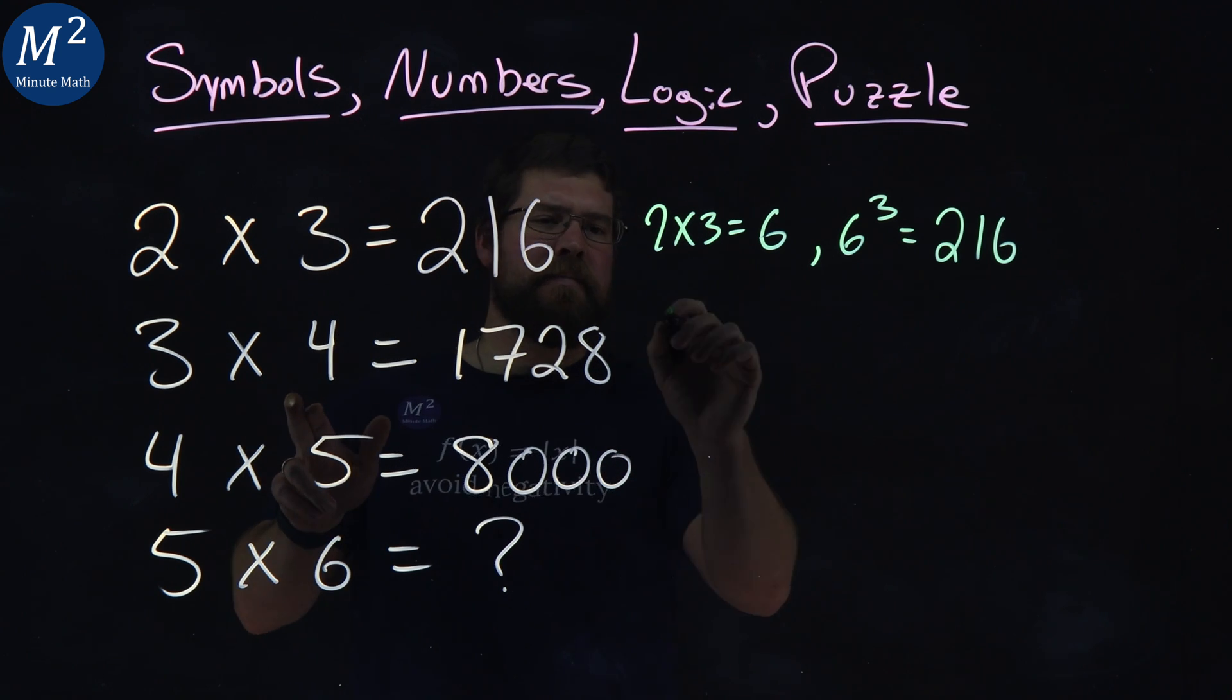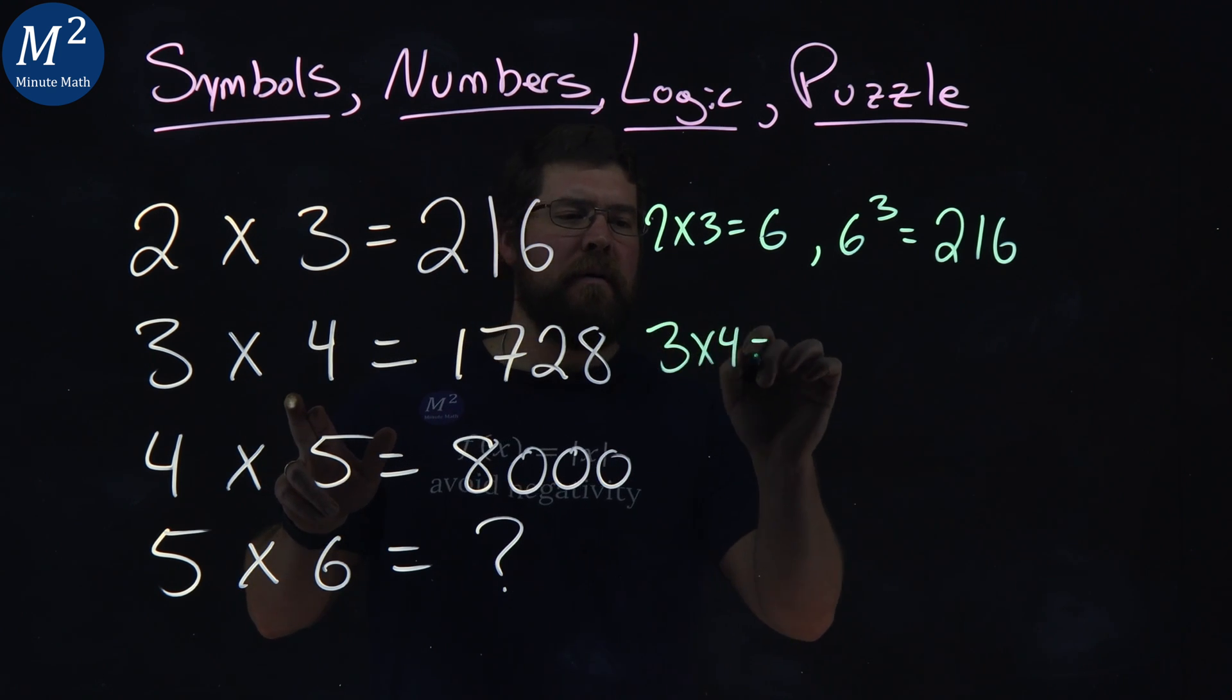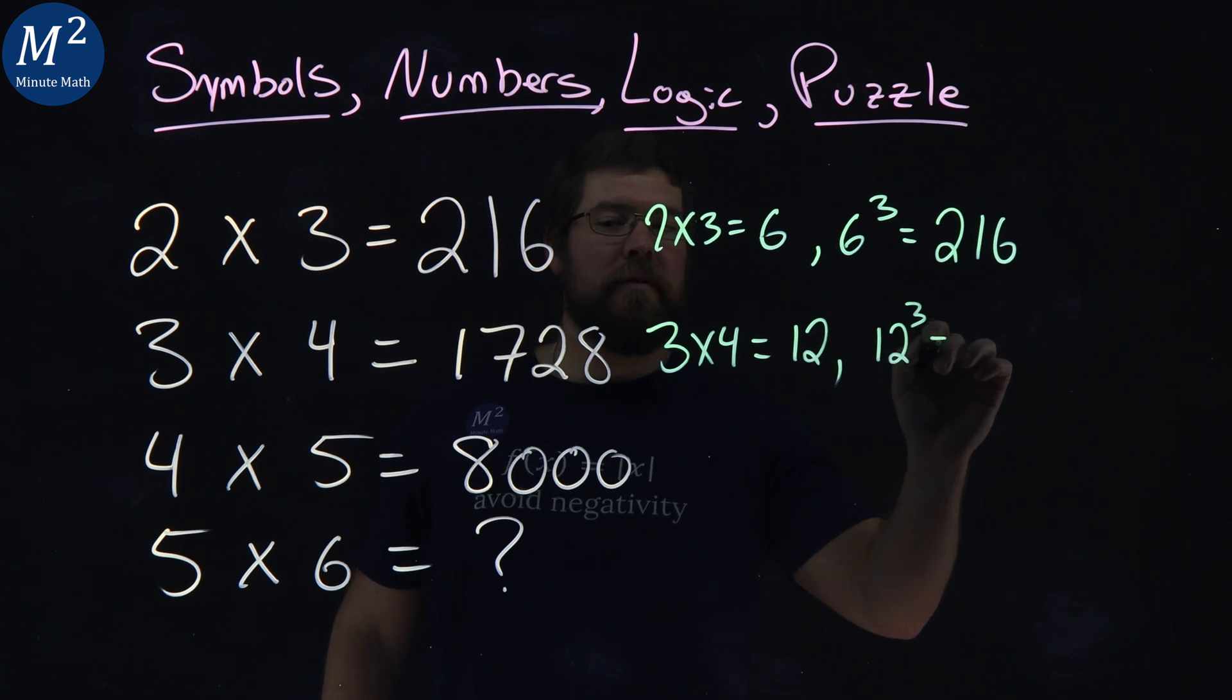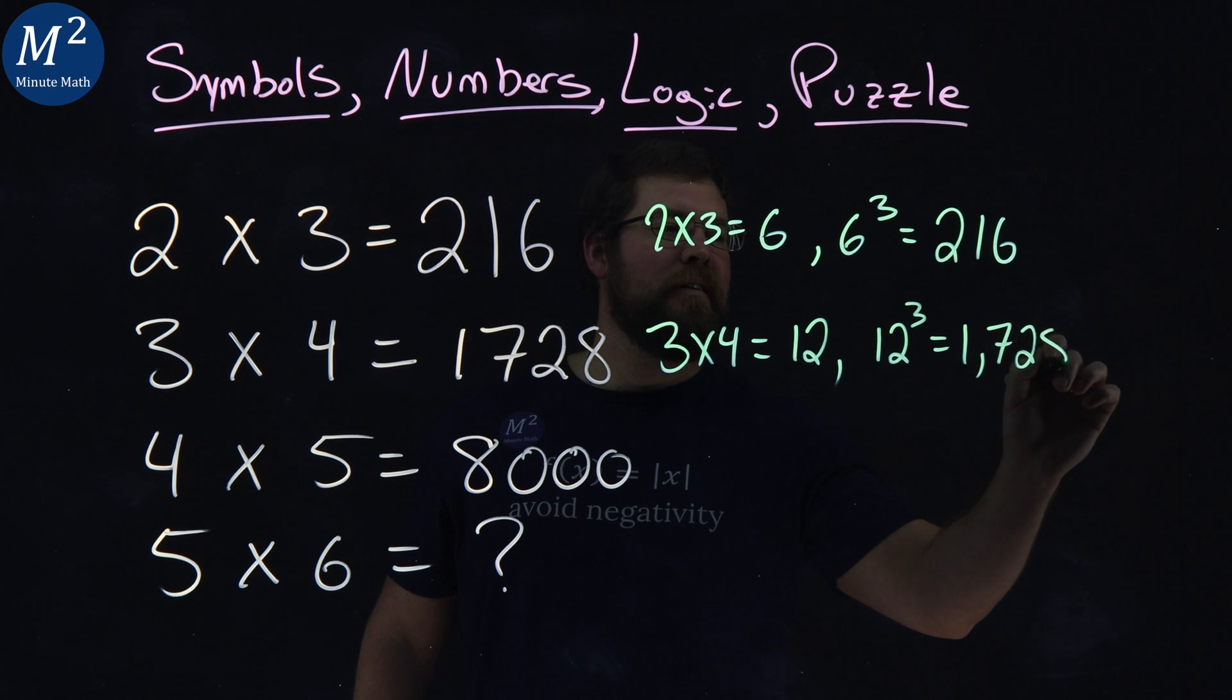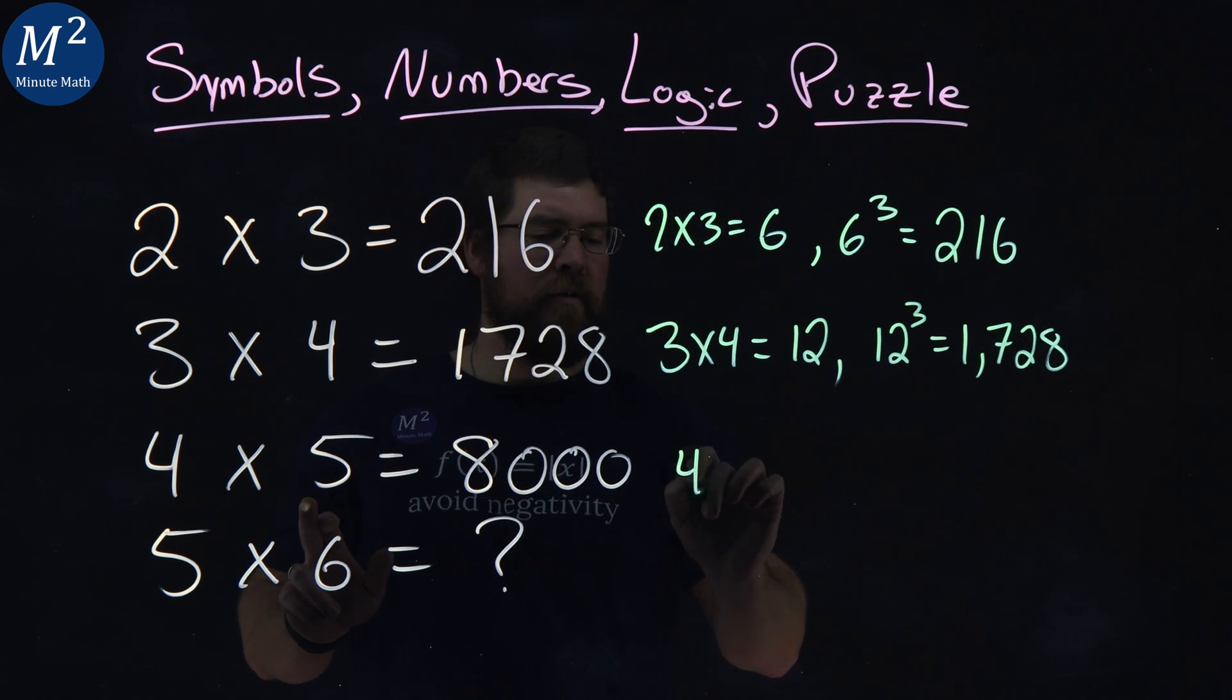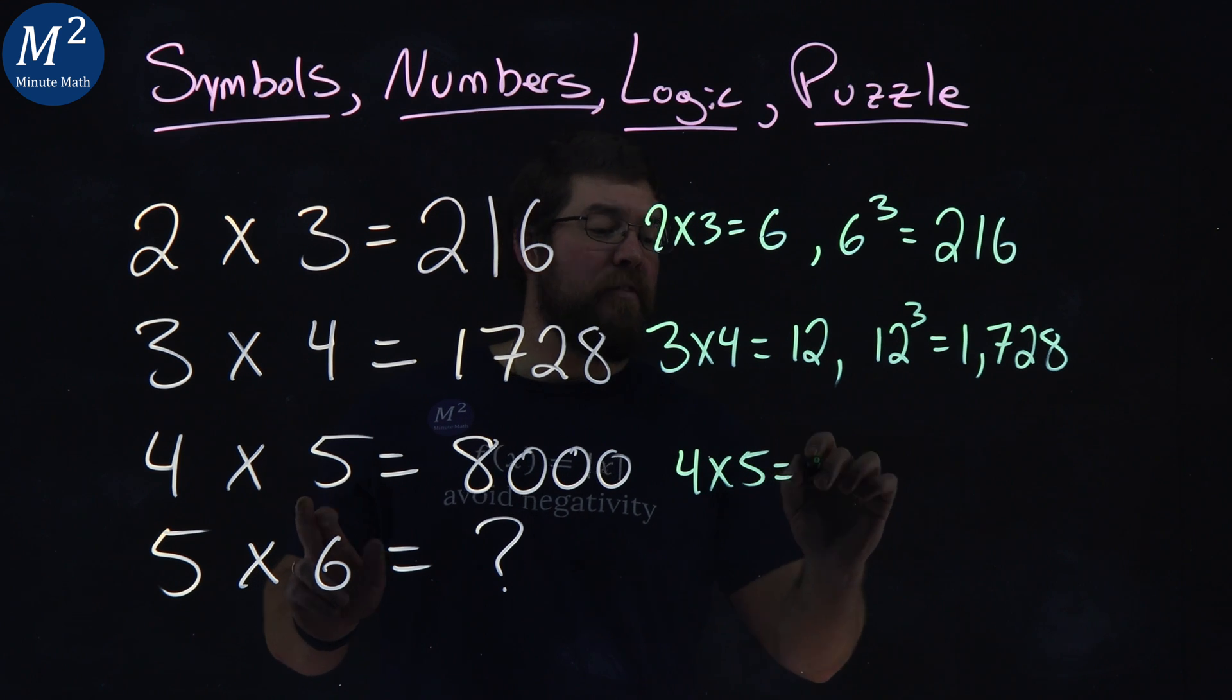3 times 4, that's 12. 12 cubed is 1,728. Is it really this simple? 4 times 5, that's 20.